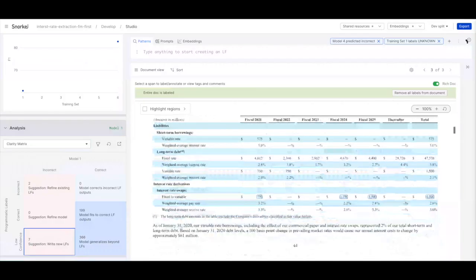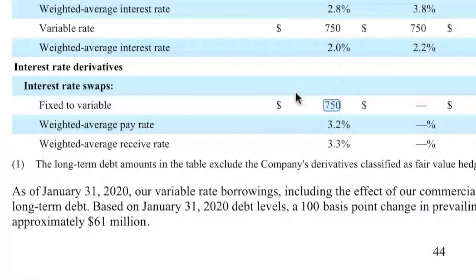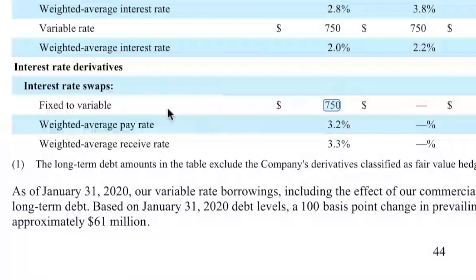What I can see here is that the model trained in Snorkel has not been able to identify these four particular line items correctly as interest rate swaps. But for me as a human, it's really easy to realize that these are interest rate derivatives — it says 'interest rate derivatives,' it says 'interest rate swaps,' and it also says 'fix the variable,' which I know applies specifically to these particular derivatives.